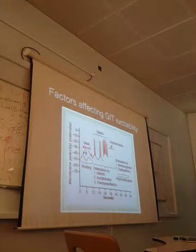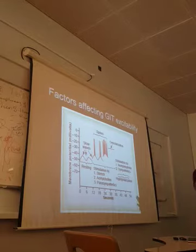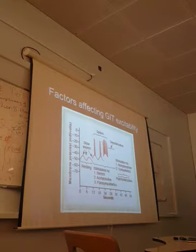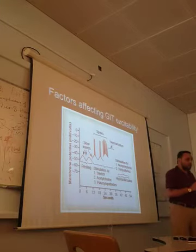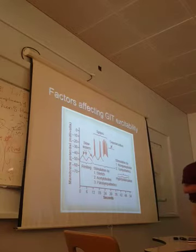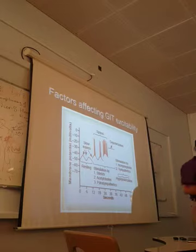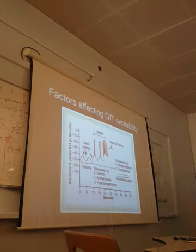There is something called the basic electrical rhythm - these are slow waves. The basic electrical rhythm is at about minus 50 millivolts, and you can also call it the resting membrane potential. The resting membrane potential at any given moment of time determines the level of excitability of that particular tissue.